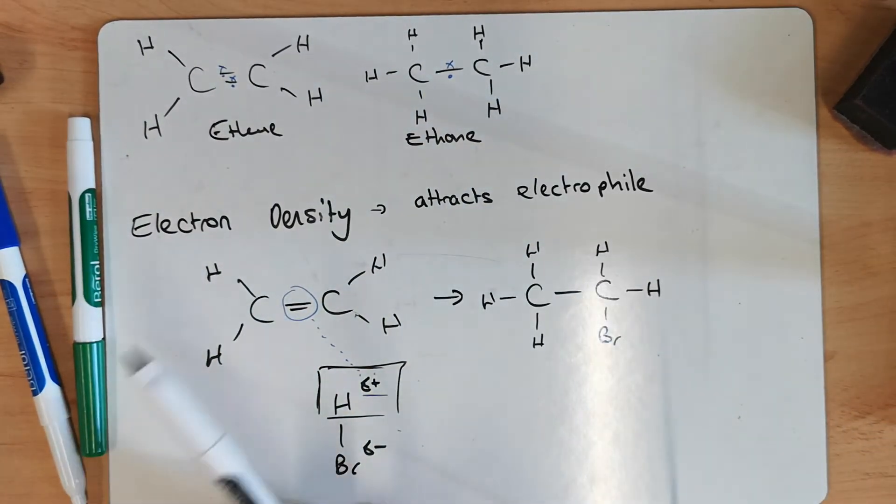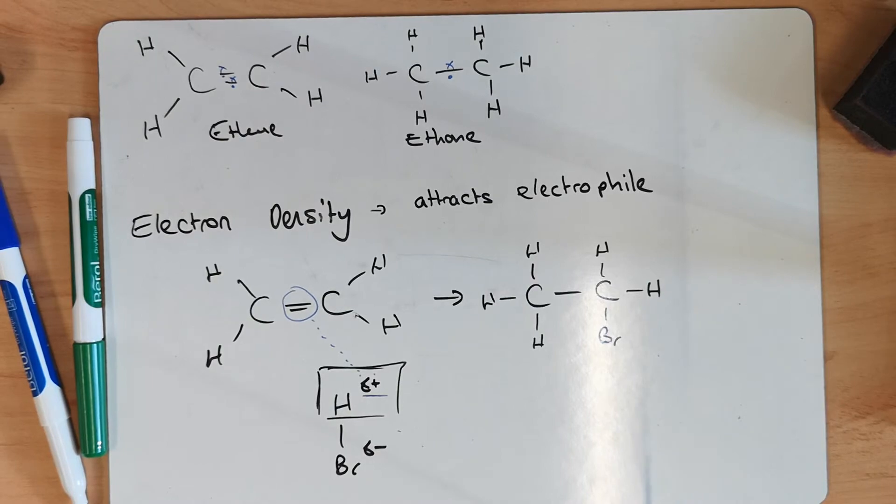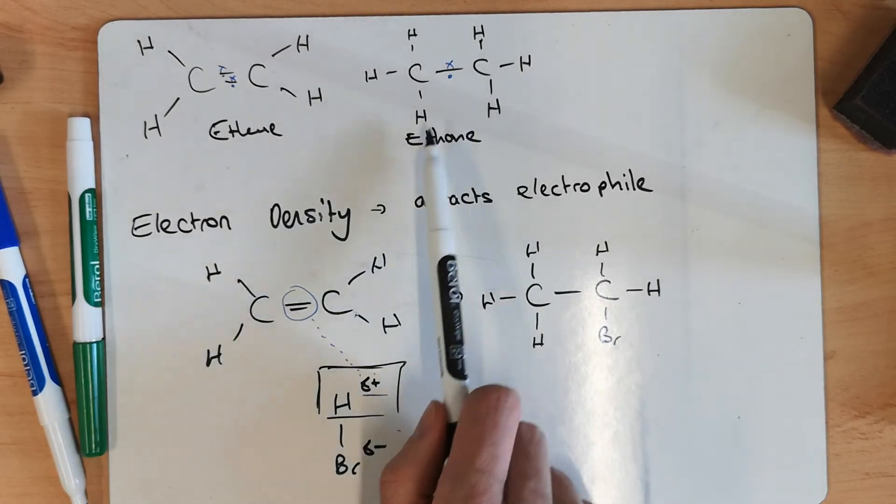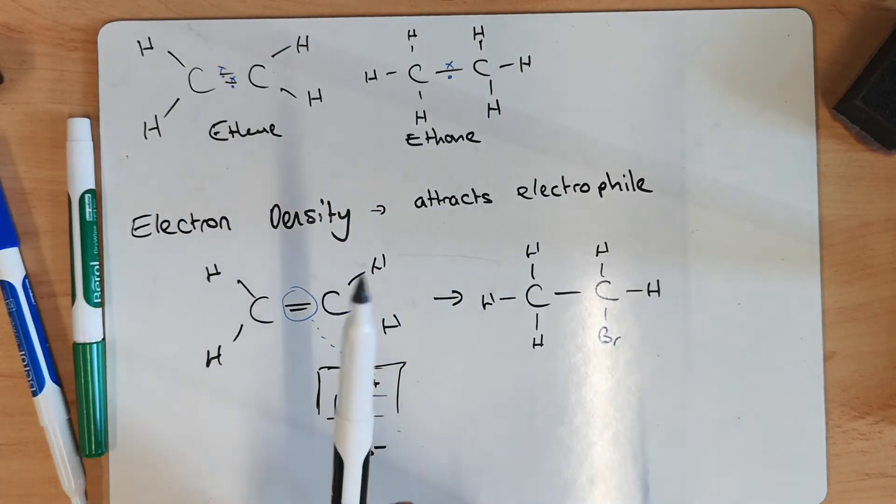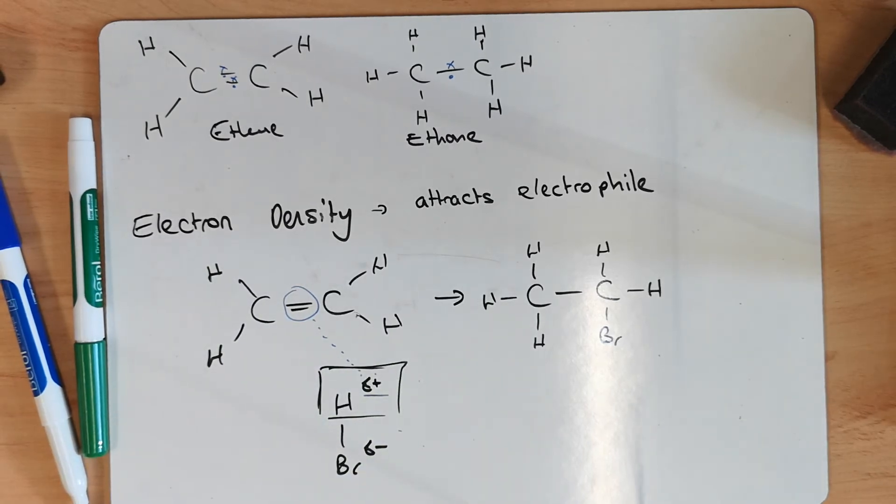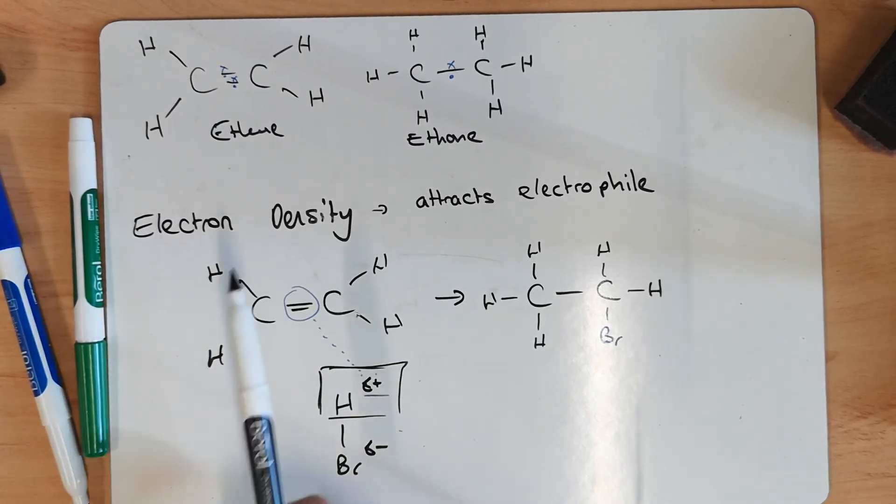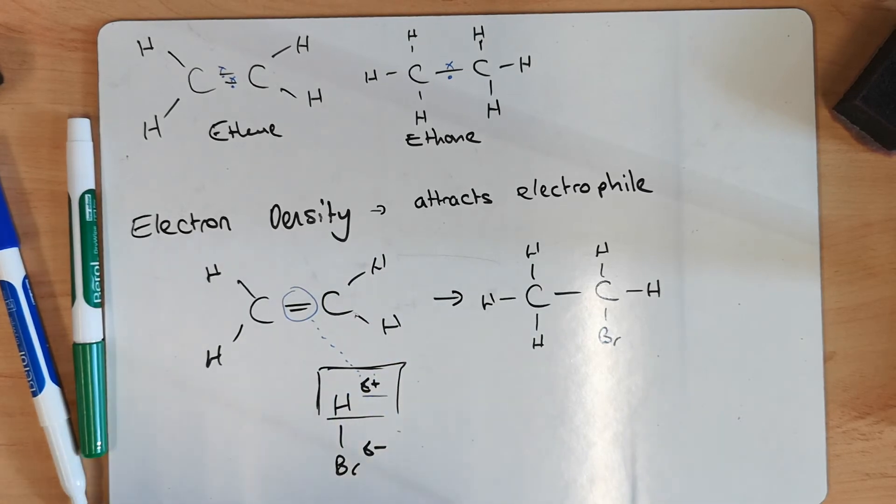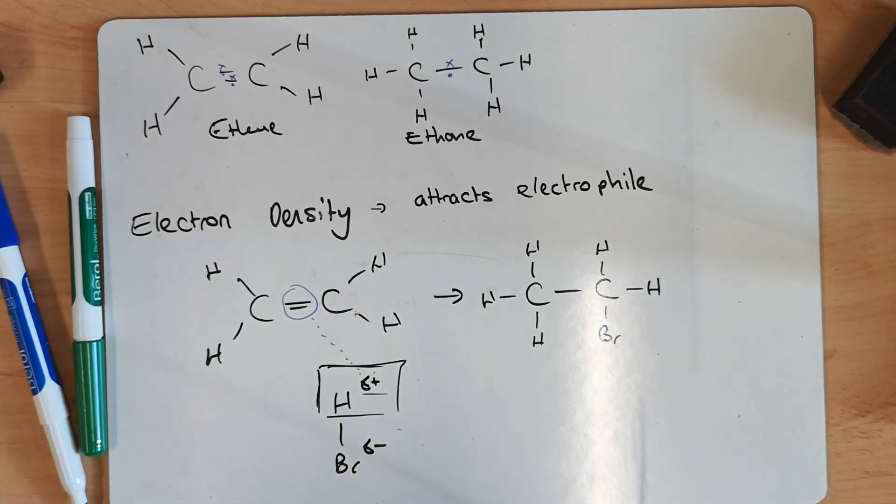So alkenes attract electrophiles, which it then reacts with. Alkanes won't attract an electrophile, and it couldn't then react with it if it wanted to, because it's got no weak pi bonds. But this is one reason why alkenes can react a bit more as well, is that area of electron density attracts electrophiles. So those are the two reasons to learn for why alkenes are more reactive than alkanes.